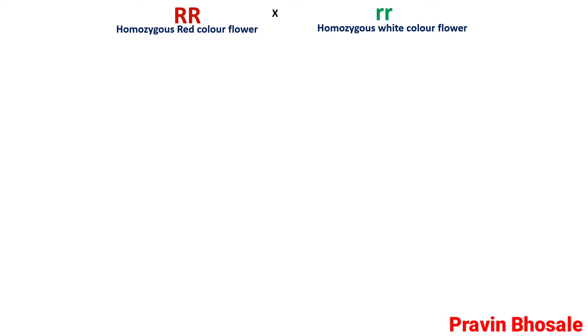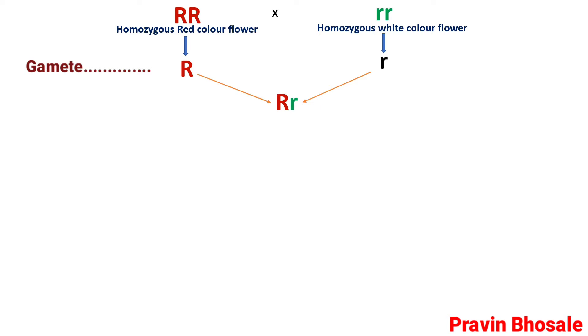A homozygous red color flower plant is crossed with a plant producing homozygous white color flower. The phenotype is homozygous red color, with genotype RR, and the white flower plant has genotype rr. During gamete formation, we get capital R and small r. After crossing, the F1 plant produces a heterozygous red color flower, with genotype Rr.